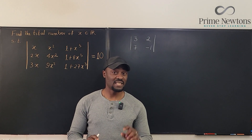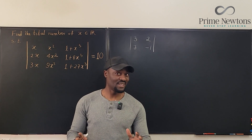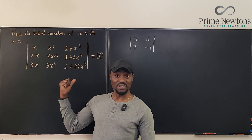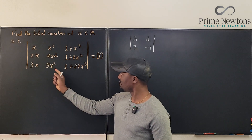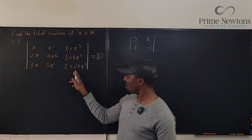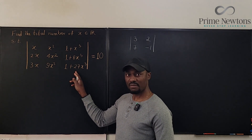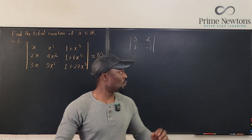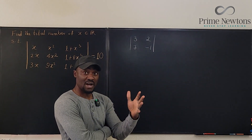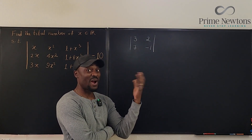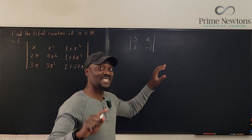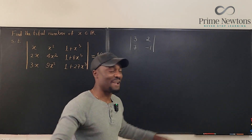The first thing I want to highlight is a property of determinants which I think I never talked about, and it is essential to solving this problem. What we have here is a column that is a sum of terms. So consider this: we have a 2×2 determinant with entries 3, 2, 7, -1. Is there another way I could write this determinant? Note — this does not work for matrices, but it works for determinants.